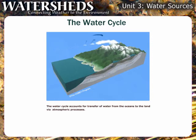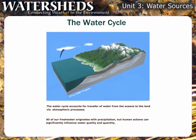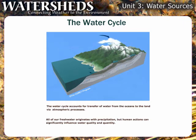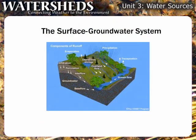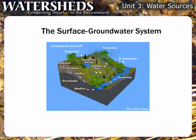The water cycle accounts for the transfer of water from the oceans to the land via atmospheric processes. All of our freshwater originates with precipitation, but human actions can significantly influence the quality and quantity of freshwater that will be available in the future. Precipitation affects a watershed both at and below the ground surface. Surface water comprises all rivers and streams, lakes and reservoirs, or any other water on the earth's surface, such as spring water or overland flow from a precipitation event.